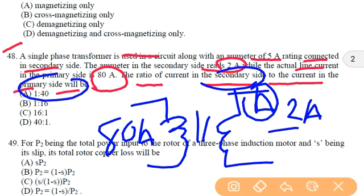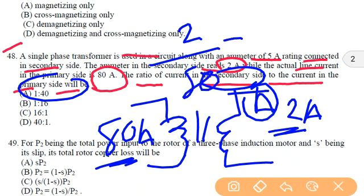So we have to calculate the ratio of secondary current to the primary current. So we have secondary current as 2 ampere, primary current is 80 ampere, that is 2 divided by primary current 80, that equal to 1 by 40. So option A will be the correct answer, that is 1 is to 40.